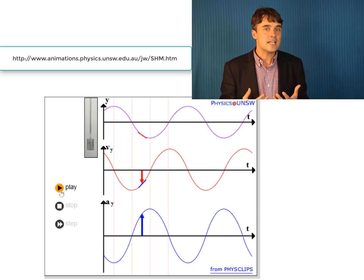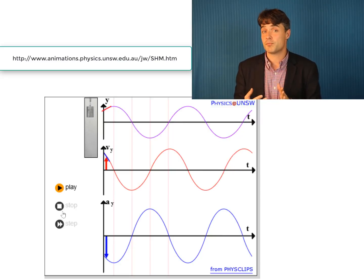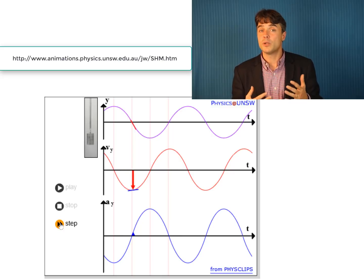Notice that you get the same SHM for a vertical spring as you do for the horizontal spring. The effect of gravity is only to shift the equilibrium position. And SHM is in fact prevalent in many many physical situations, which we'll discuss in the next video.